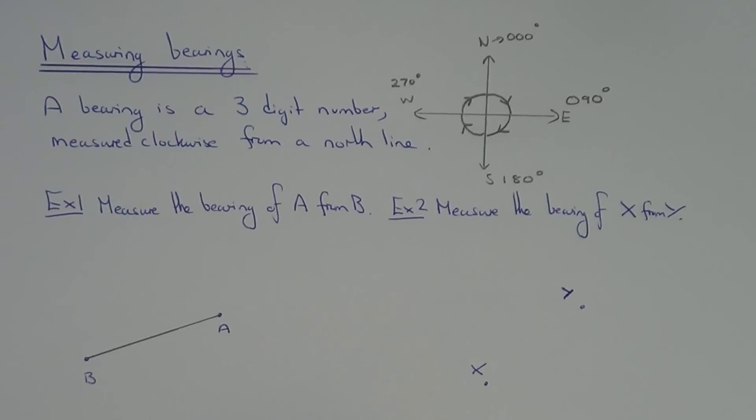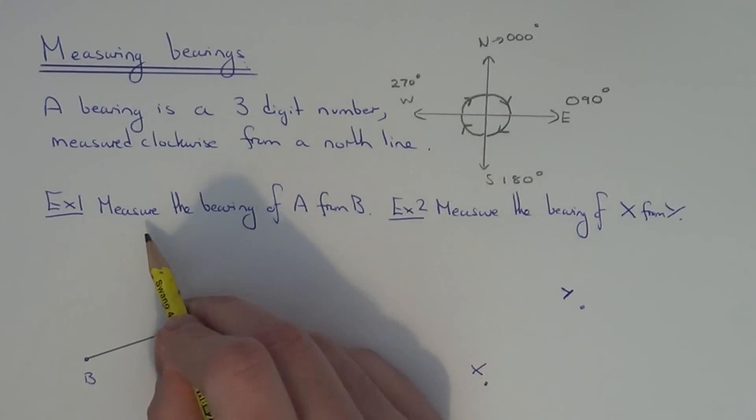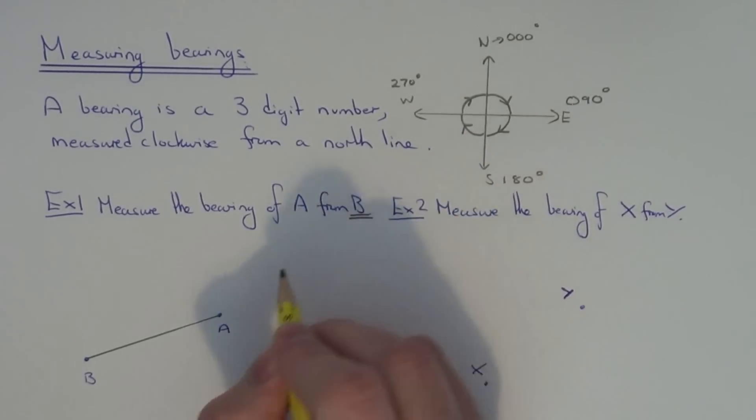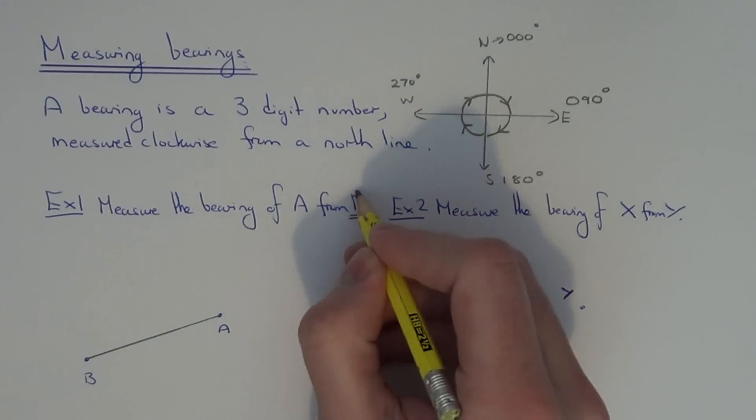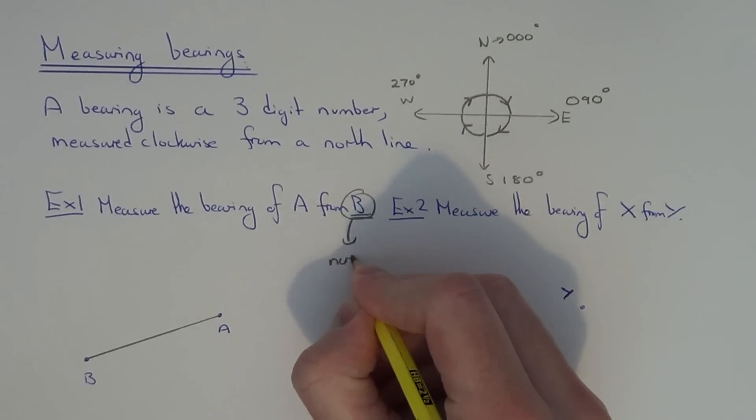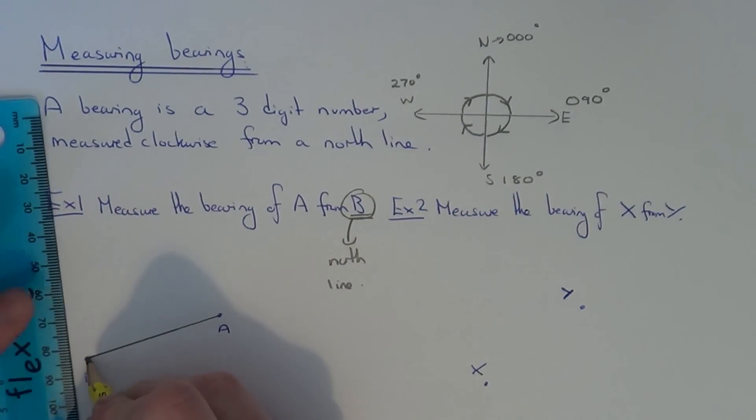The next thing you need to do is put the north line in at the correct place. The question says measure the bearing of A from B. So we've got to measure it from point B. So this is where our north line goes.